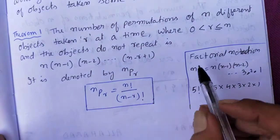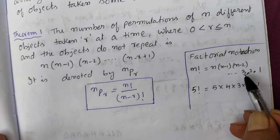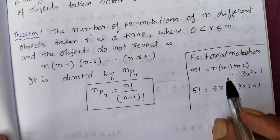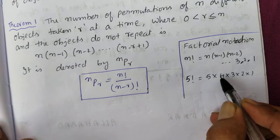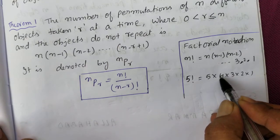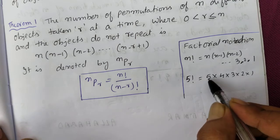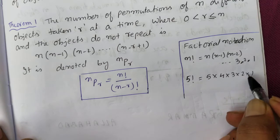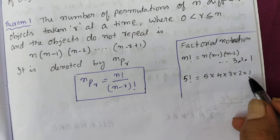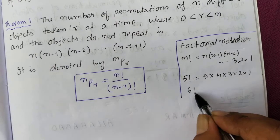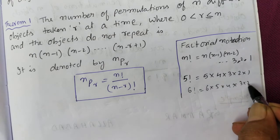The formula for NPR is N factorial divided by (N minus R) factorial. N factorial means N × (N−1) × (N−2) × ... × 1. For example, 5 factorial is 5 × 4 × 3 × 2 × 1. And 6 factorial is 6 × 5 × 4 × 3 × 2 × 1.